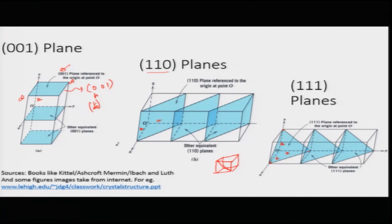You do not have to index each plane individually; you talk of an h, k, l lattice plane which immediately specifies the orientation and direction of that lattice plane. This becomes a way to actually analyze crystal structures, and we will continue to understand some of the properties of these crystals as they diffract light or electromagnetic waves, where use of these indices will become very essential, which we will continue in the next few lectures.